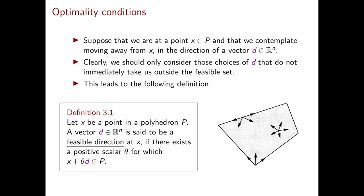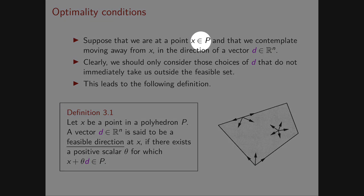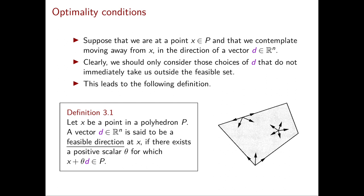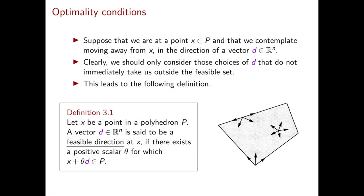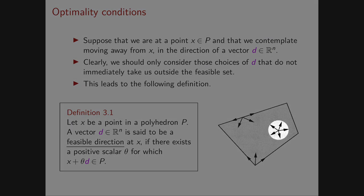The idea is to define a way to move from our current vector into some specific direction. Suppose that we are at the point x in P and we want to move from x in the direction of a vector d. Our objective is to find a better feasible solution, so we want to move in a direction that keeps us inside the feasible set. For example, if our polyhedron is a quadrilateral in dimension 2 and our vector x is in the interior, we can move in any direction as long as we don't move too far.